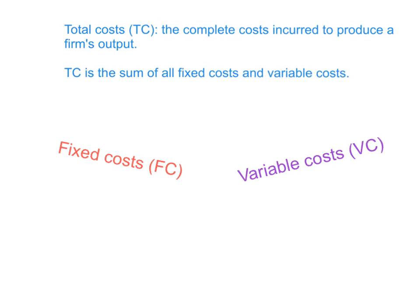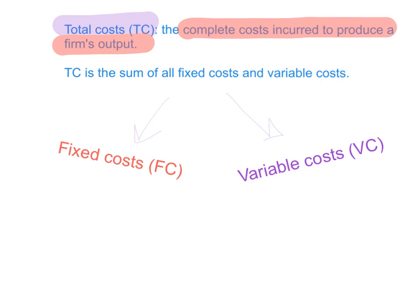In the short-run, there are fixed costs and variable costs. Let's start by defining the term total costs — it's very important to be able to define total costs as well as calculate them. Total costs are the complete costs that are incurred to produce a firm's output; it includes all of the costs that the firm pays in order to produce its output. Total cost is the sum of all fixed costs and variable costs, divided into fixed costs and variable costs in the short-run.